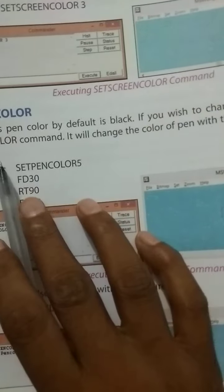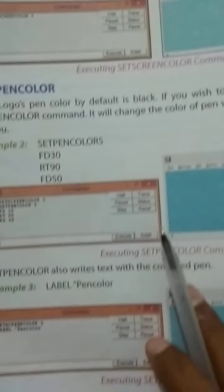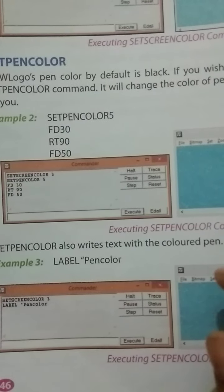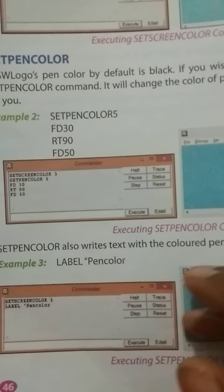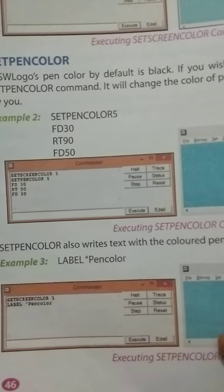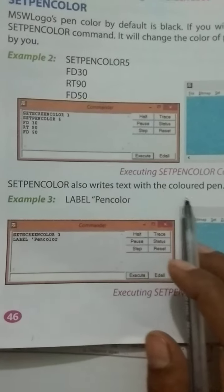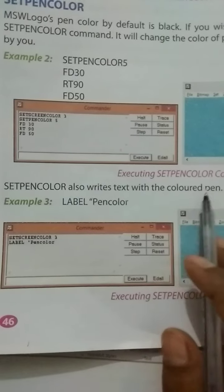This means the color will be selected by you. You can select the color from black to red, purple, green, yellow, etc. Set paint color also writes the text with the color paint.